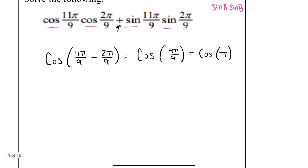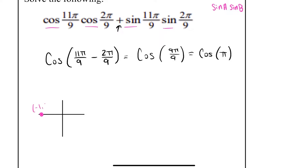So I would go to my unit circle and ask: what does cosine equal at π? Pi is going to be over here — the representative point of negative 1, 0. Cosine is always the x value, so the x value is negative 1. Cosine of π equals negative 1 as my final answer.